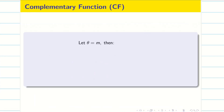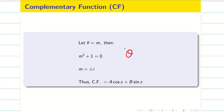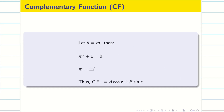We are going to find the CF. Put θ = m: m² + 1 = 0, so m = ±i. Since it is Cauchy or Legendre, the answer should be in terms of z because we are using θ. So CF = a cos z + b sin z.